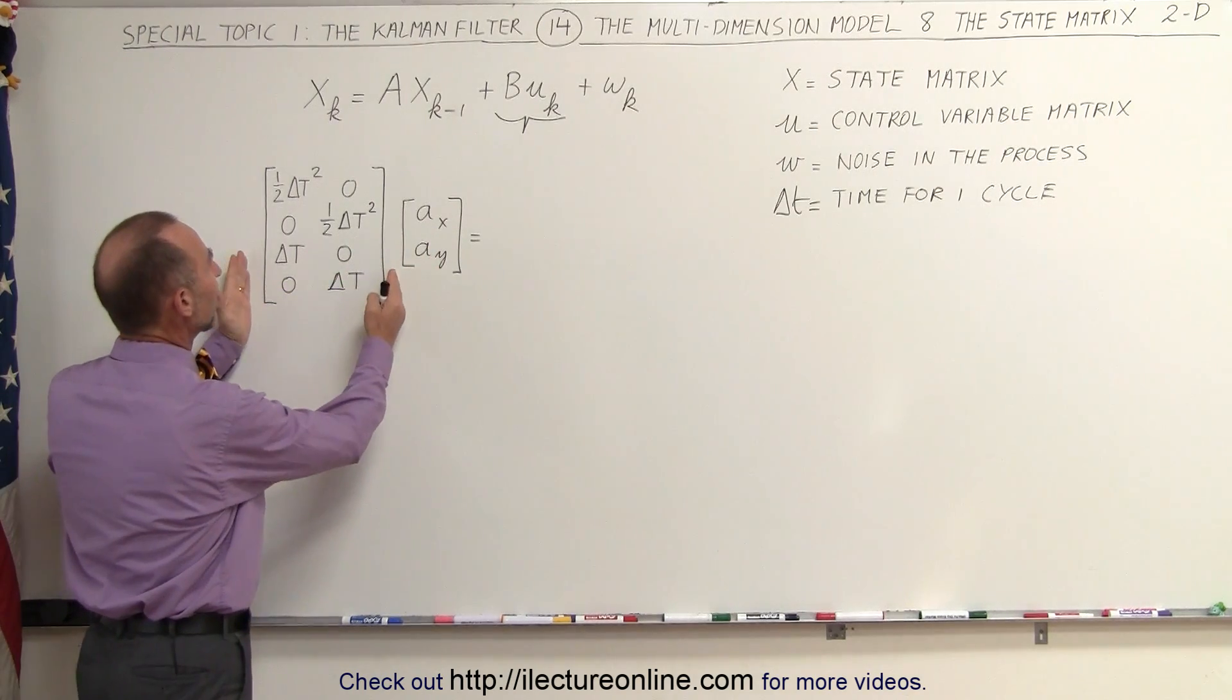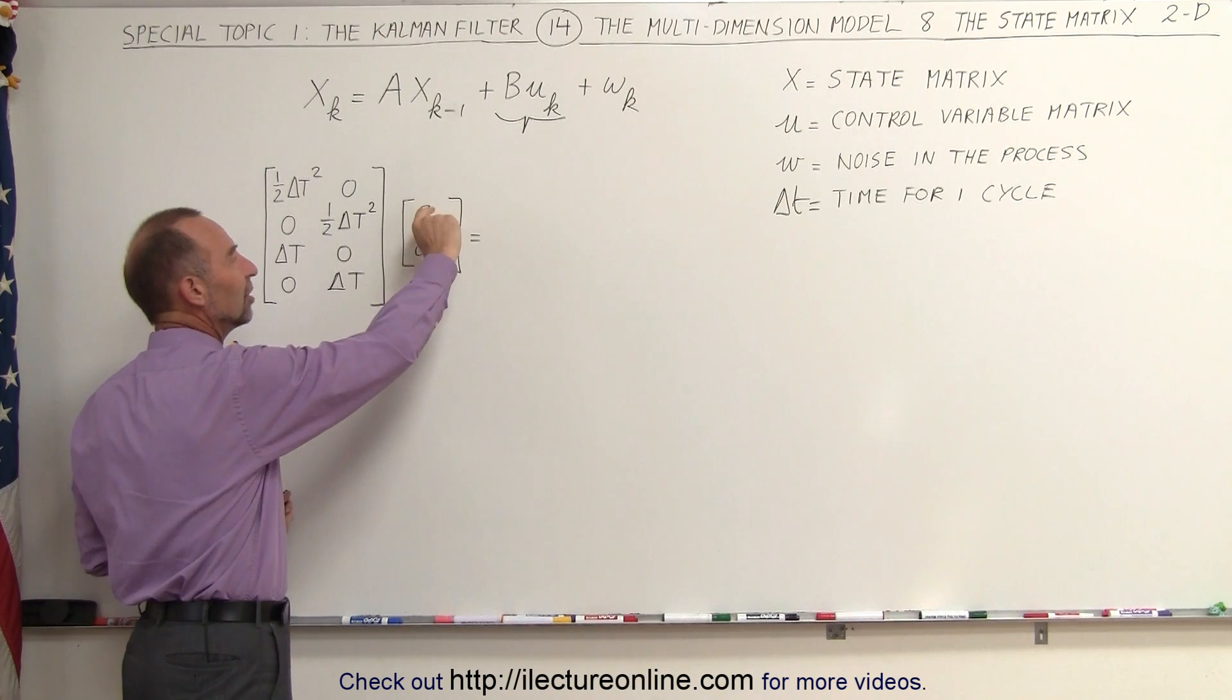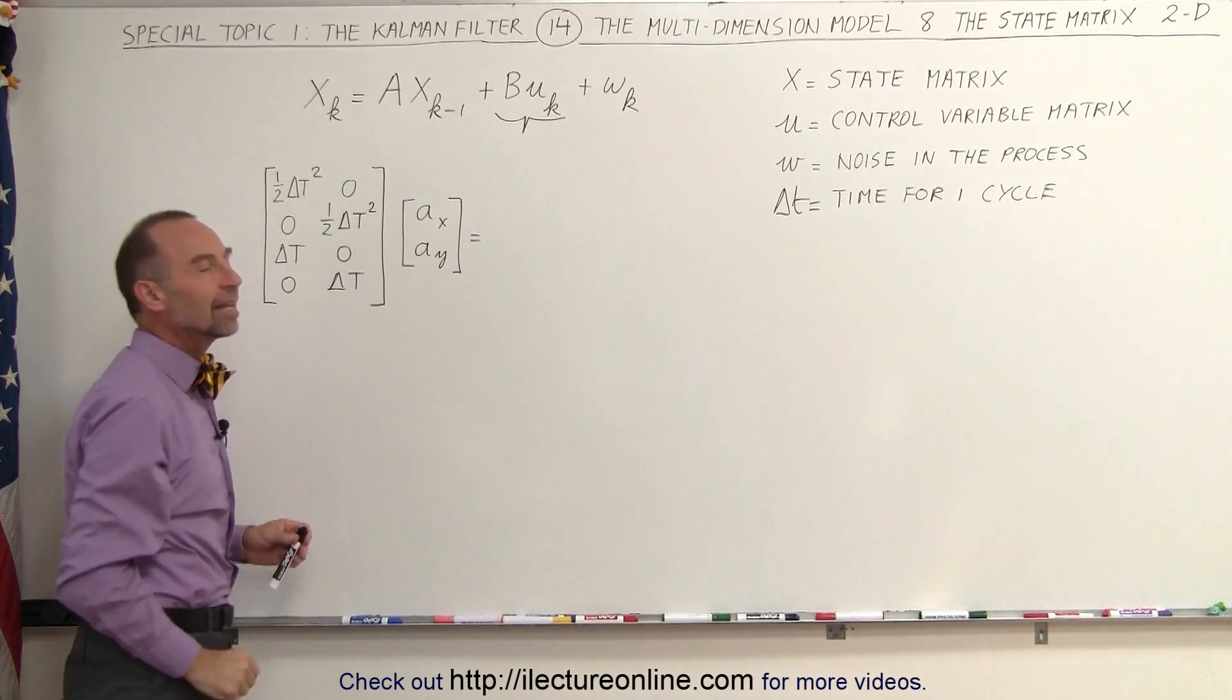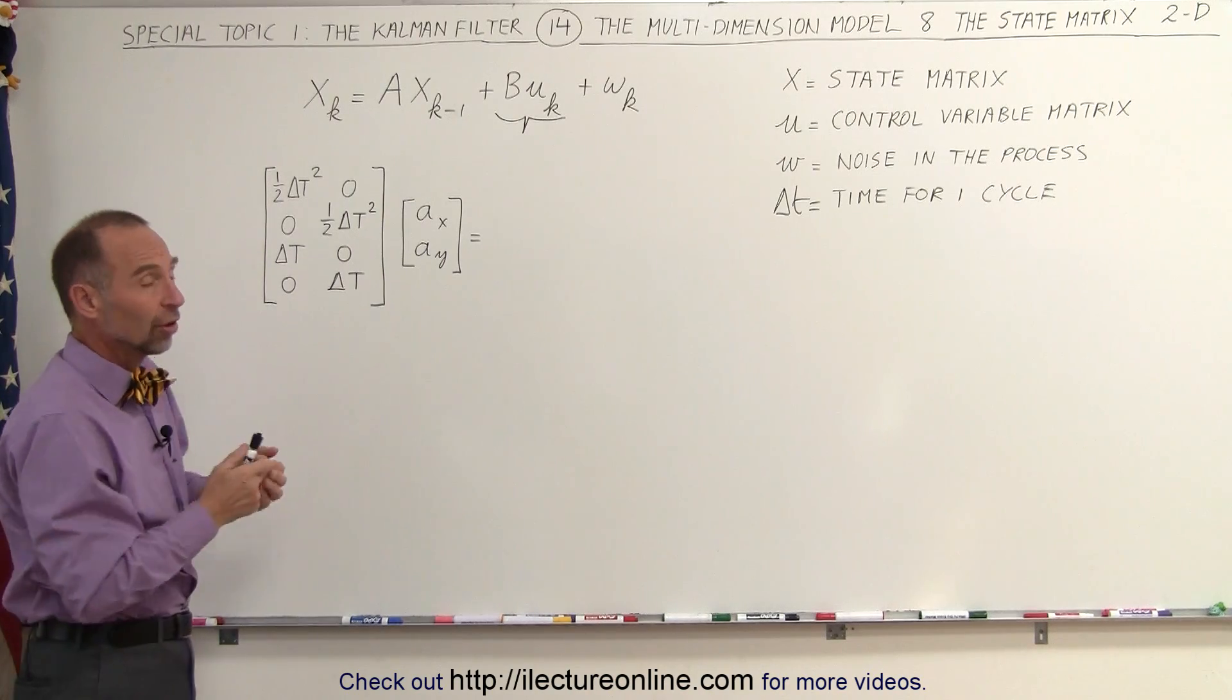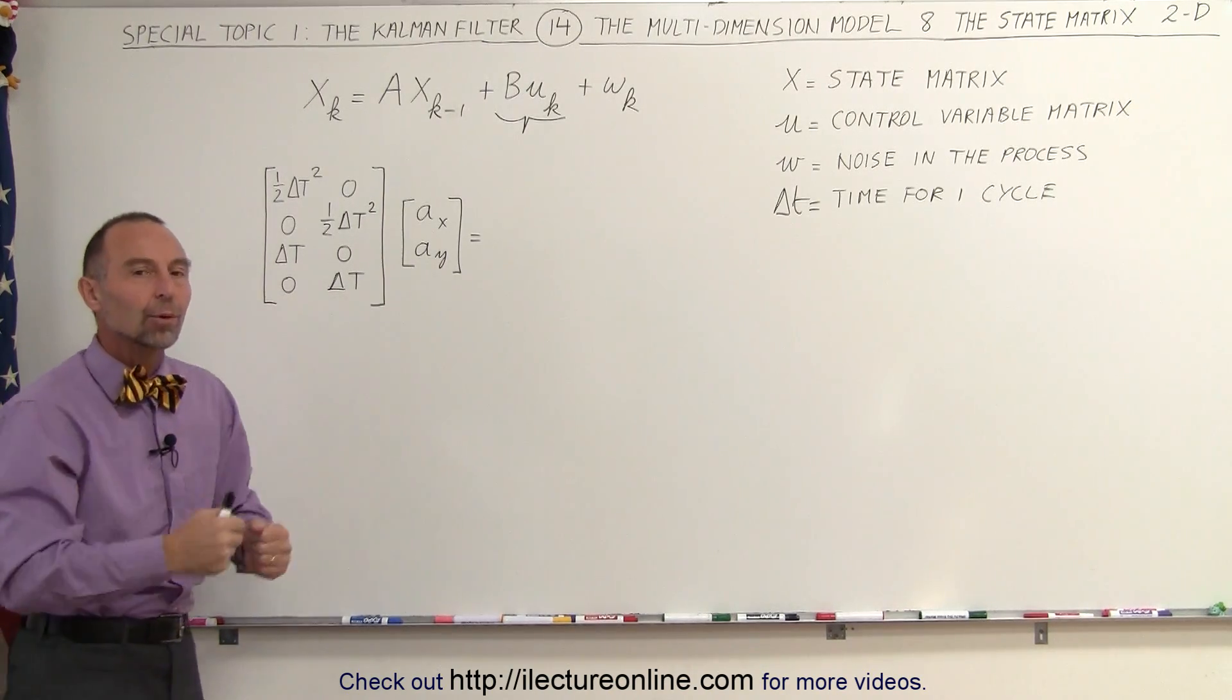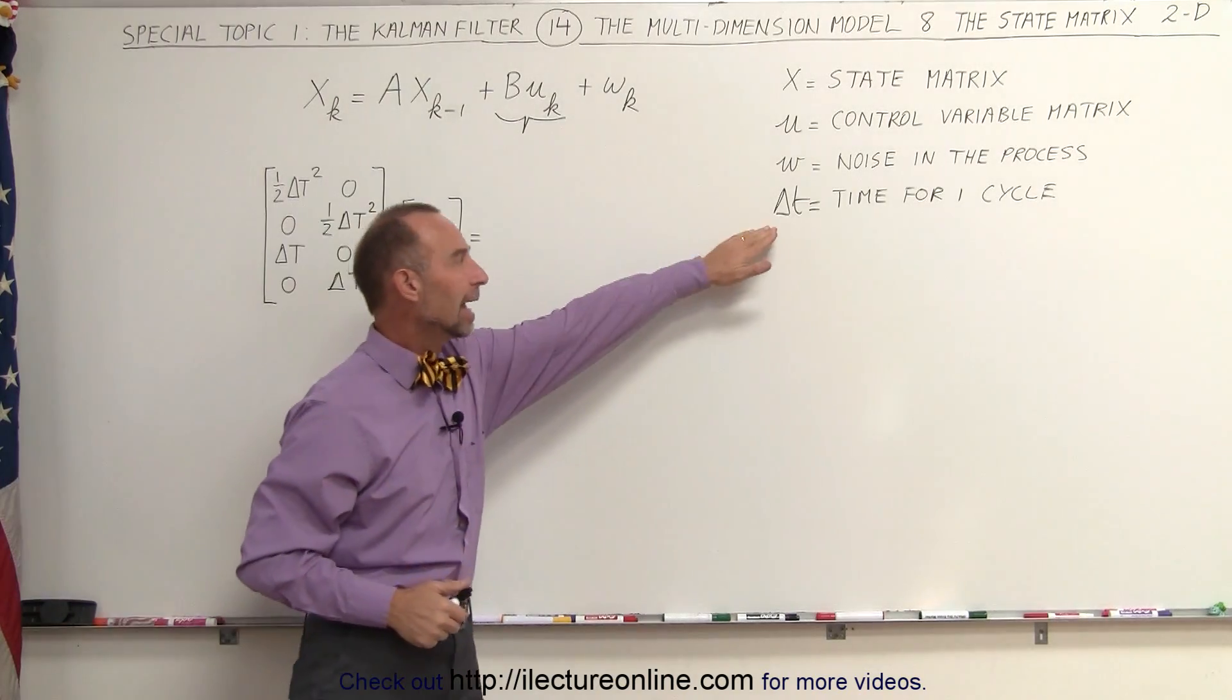This is the B vector, the B vector that translates the acceleration in the x and y direction into a format so we can add it to the state matrix so we can update the position and the velocity at the next moment in time after delta t has elapsed.